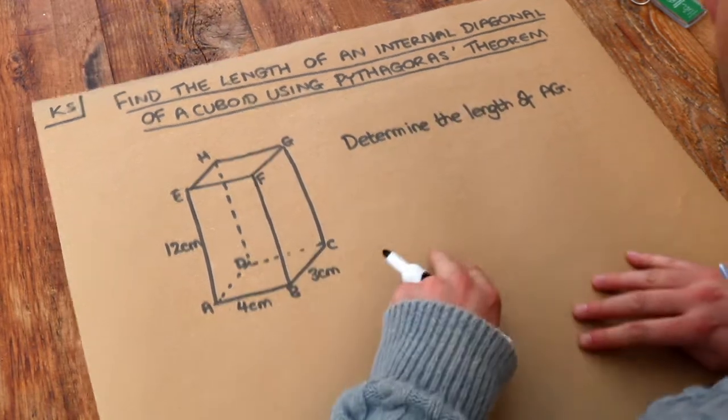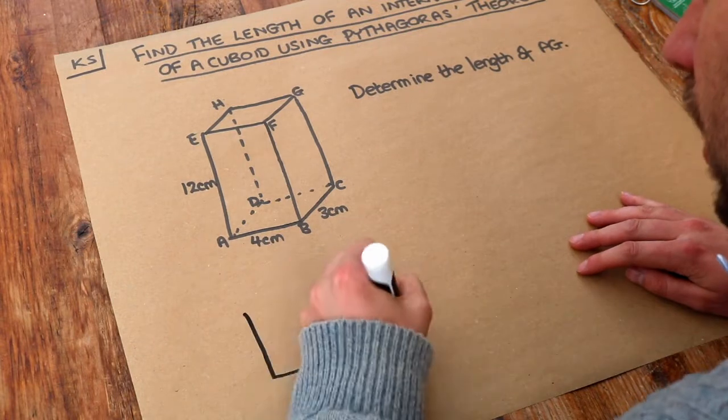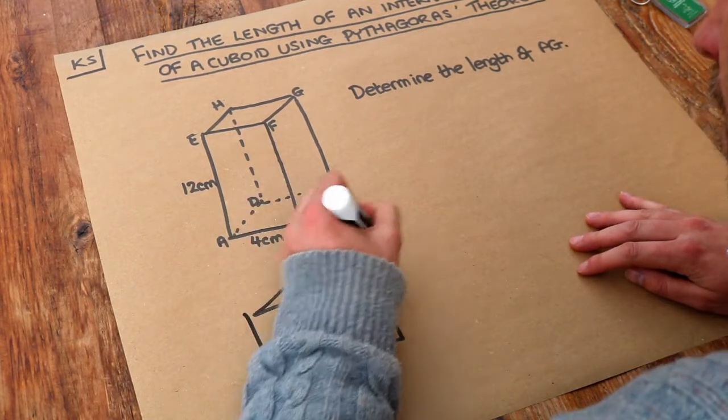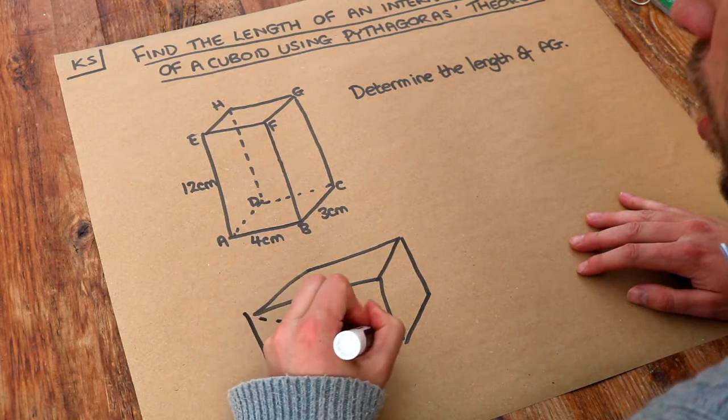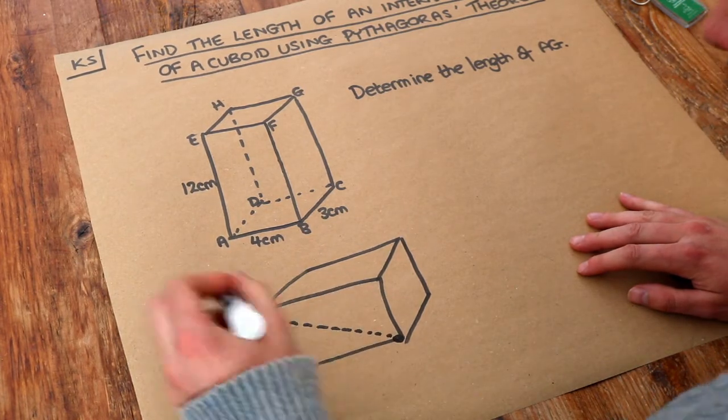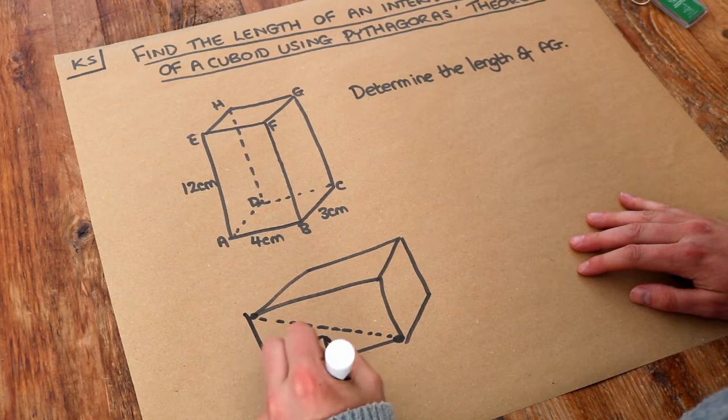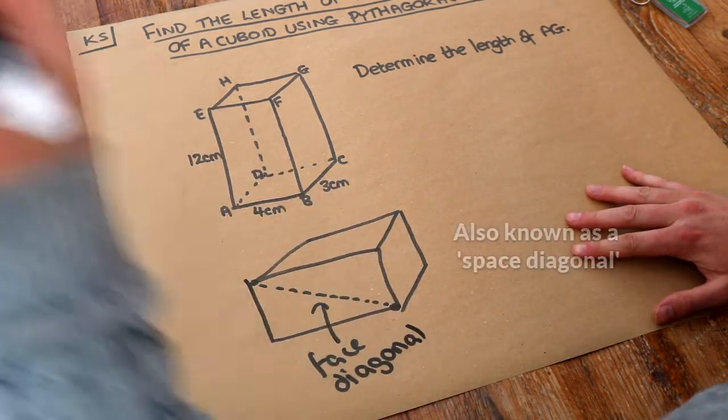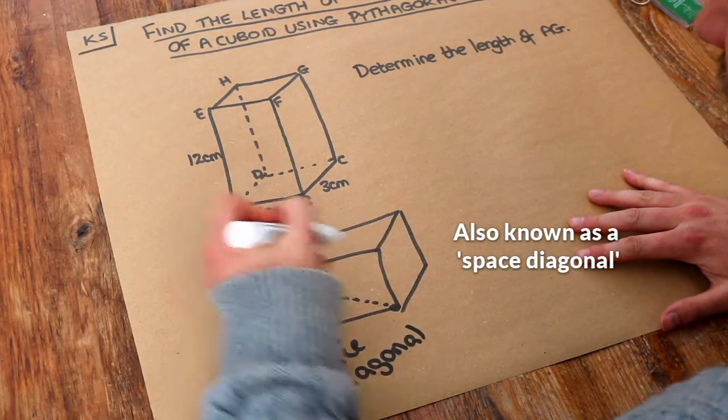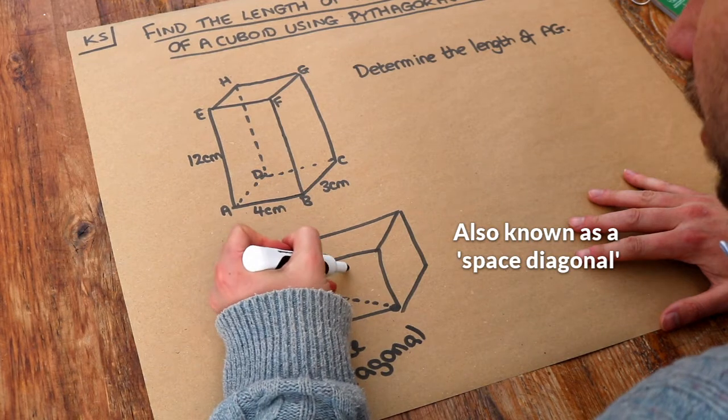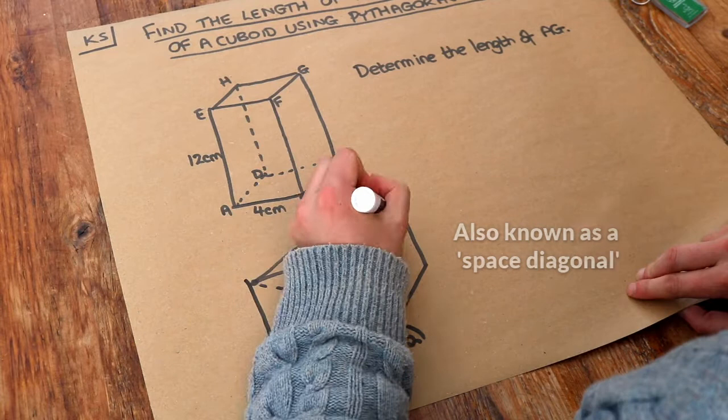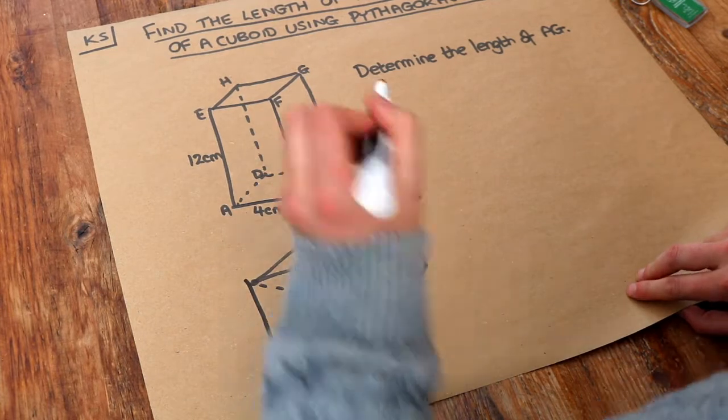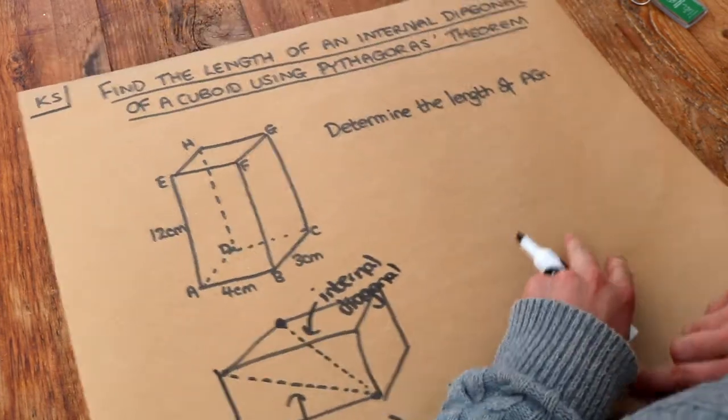Now what do I mean by an internal diagonal? If I have a cuboid then a face diagonal would be a diagonal across a face from one corner to another, hence the name. An internal diagonal is one that connects opposite corners of the cuboid and where the diagonal goes through the cuboid, through the middle of it. Finding internal diagonals is slightly harder than finding face diagonals which we explored in another video.